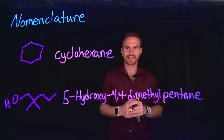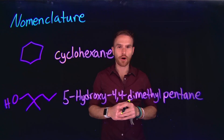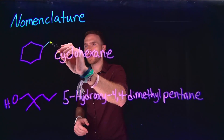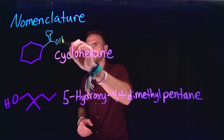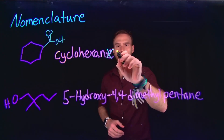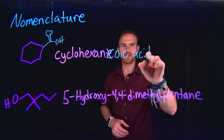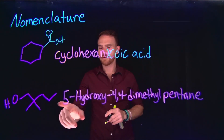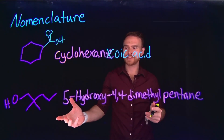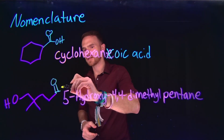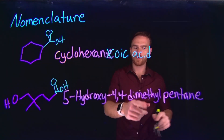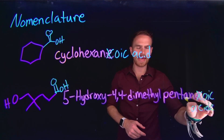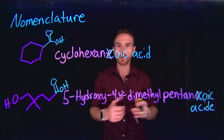Let's talk about how we name carboxylic acids. Monocarboxylic acids are named by changing the '-e' ending to '-oic acid.' For example, cyclohexane with a carboxylic acid functional group becomes cyclohexanoic acid. Similarly, 5-hydroxy-4,4-dimethylpentane becomes 5-hydroxy-4,4-dimethylpentanoic acid. So again, the '-e' ending is changed to '-oic acid' for monocarboxylic acids.